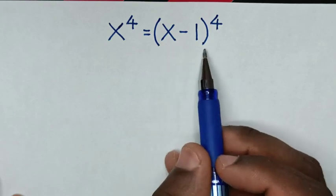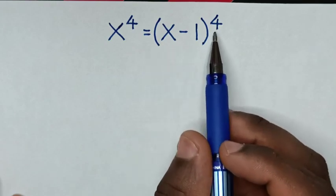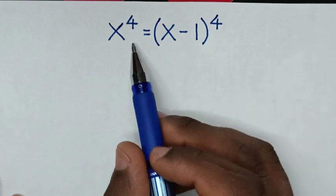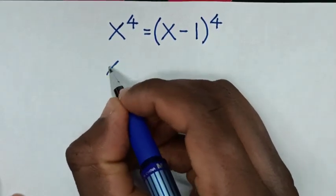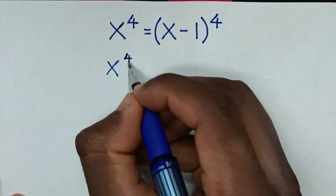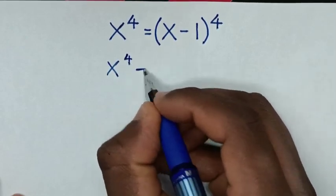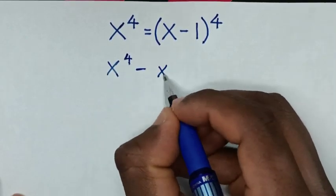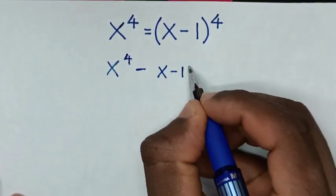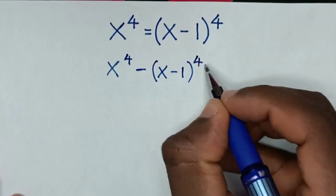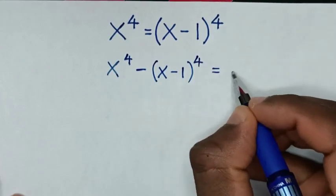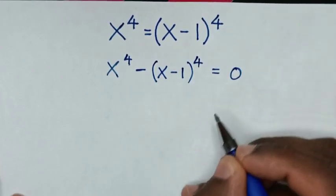First, we take (x minus 1) to the power of 4 to the left side. So it will be x to the power of 4 minus (x minus 1) to the power of 4 is equal to 0.